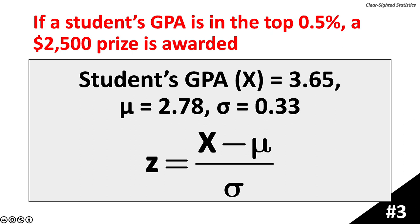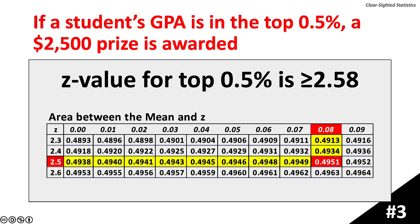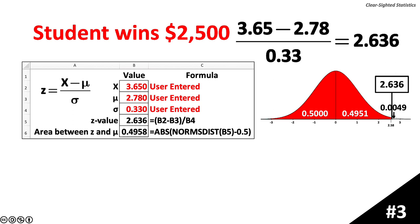Example 3: if a student's GPA is in the top 0.5%, a $2,500 prize is awarded. The student has a GPA of 3.65. The population mean is 2.78 and the population standard deviation is 0.33. The z-value for the top 0.5% is greater than or equal to 2.58, found by 0.500 minus 0.4951 equals 0.0049. A student with a GPA of 3.65 is in the top half of a percent and has earned the $2,500 prize. The calculated z-value is 2.636, confirmed using the formula and Microsoft Excel, placing this student in the top 0.42%.